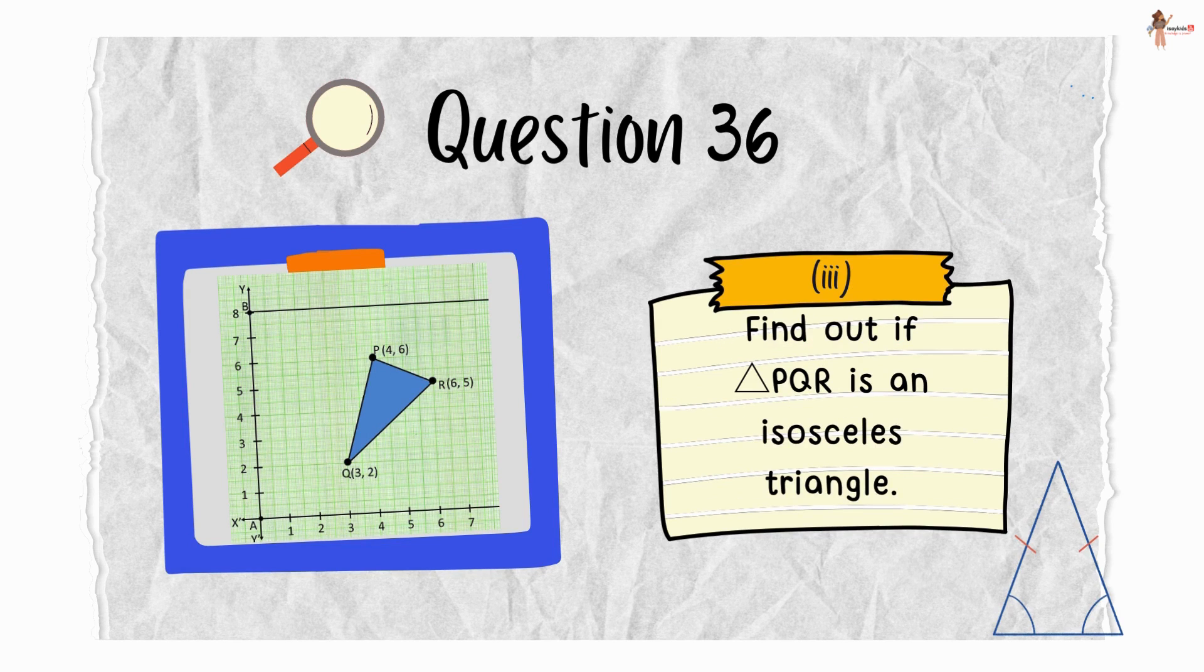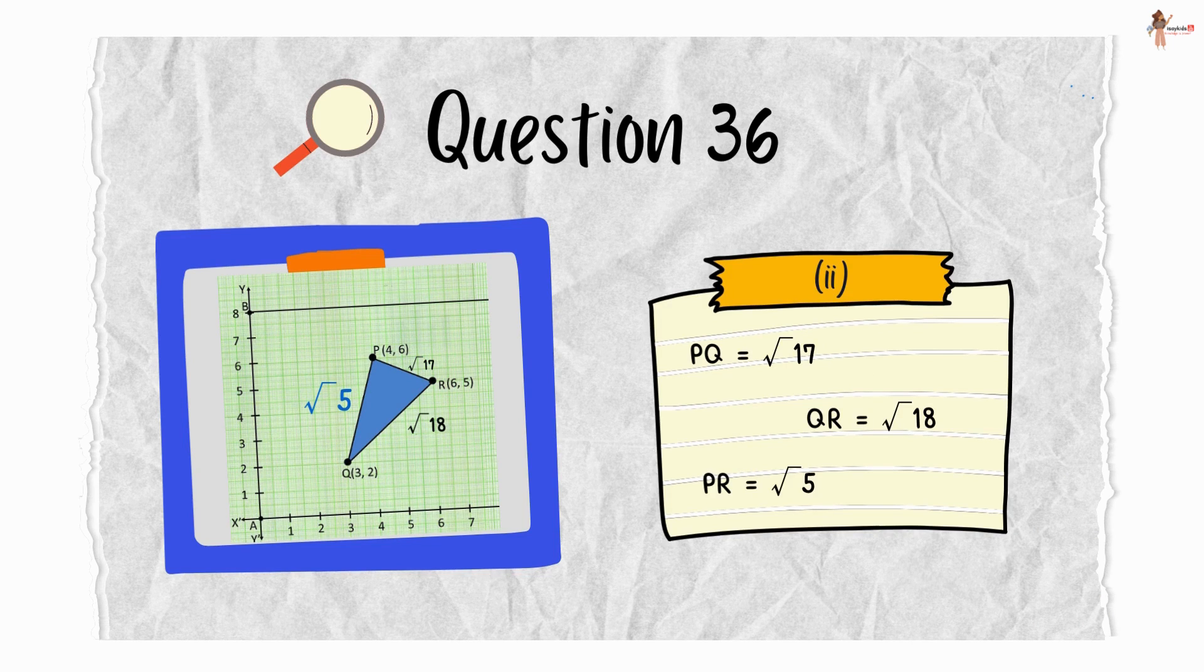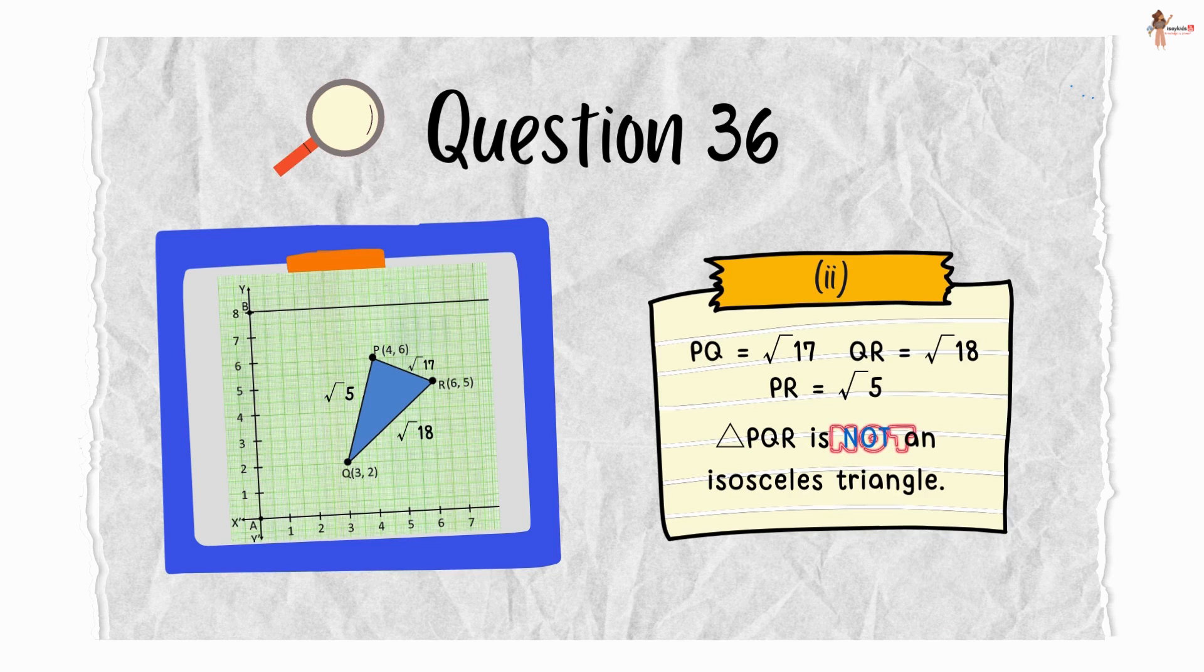Now, the last part says find out if the triangle PQR is an isosceles triangle. So we found out that PQ is root 17, QR is root 18, and PR is root 5. Therefore, triangle PQR is not an isosceles triangle.